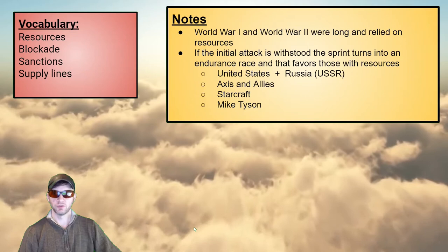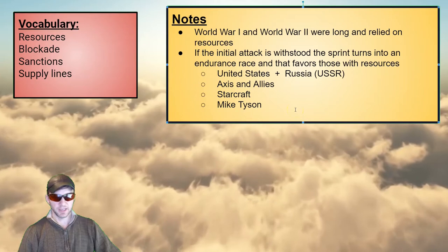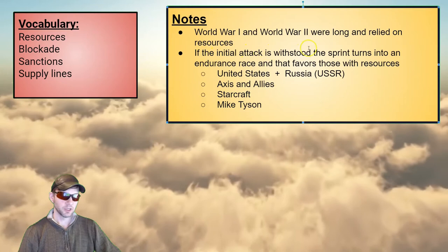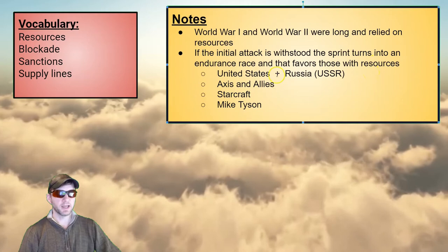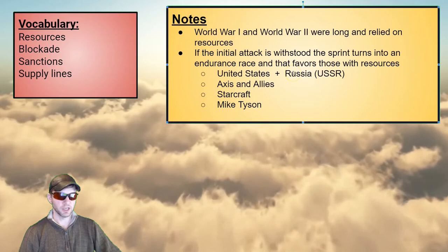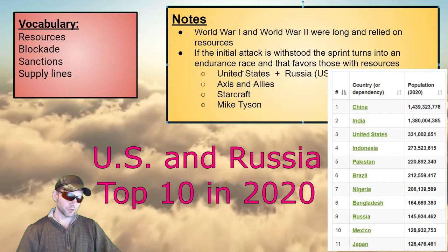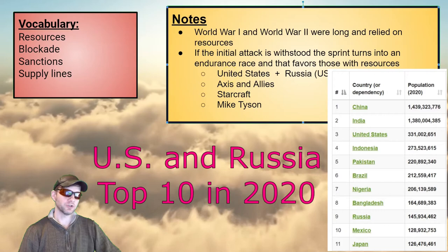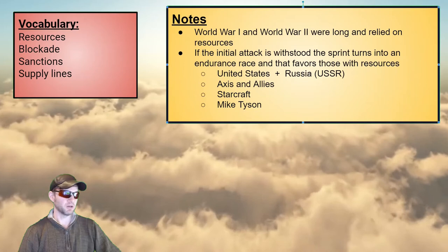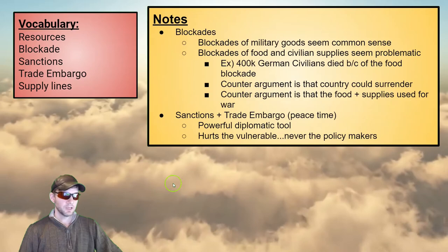During conflict, the need for resources grows. Not only do you need your normal resources, but you need extra resources for the war. World War I and World War II were long and relied on resources. If the initial attack is withstood, the sprint of a war turns into an endurance race, and that favors countries with resources. Russia — whether the Soviet USSR or non-Soviet Russia — and the United States would be favored. Russia typically has more than double the population of any other European country, so they have the people for a long-sustained conflict.